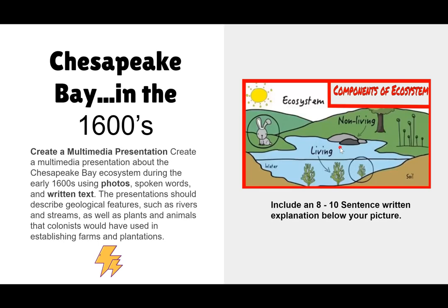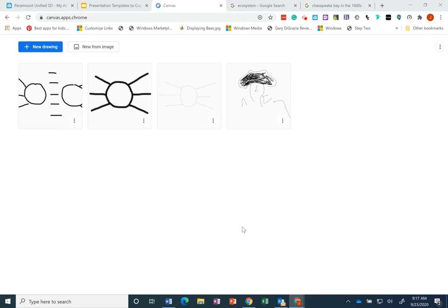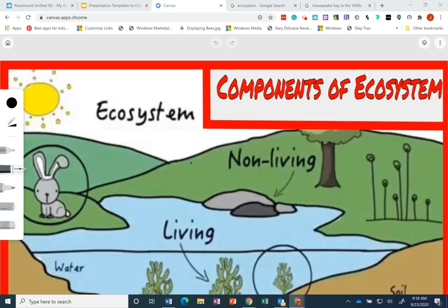One idea you can explore is looking for an ecosystem drawing similar to this, and then using Chrome Canvas to trace it and replace some of these features with the features and environment of Chesapeake Bay in the 1600s. To do that, you would first find an ecosystem drawing you feel comfortable tracing, then add it to Chrome Canvas by saving the image first and clicking 'New from Image' in the Chrome Canvas app.